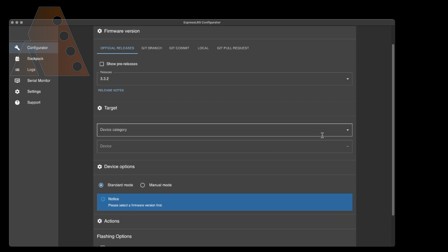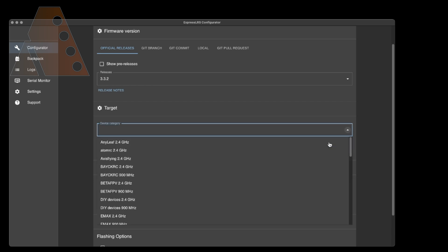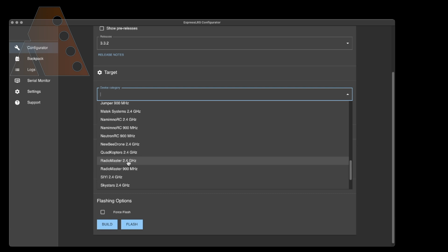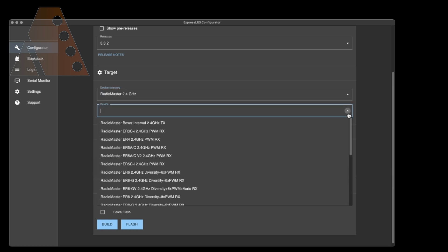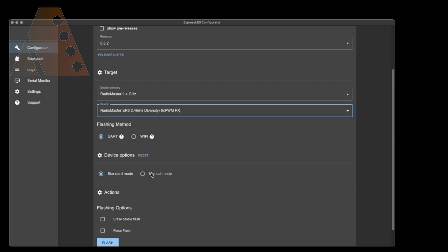We're going to click down and look for RadioMaster. So RadioMaster 2.4, we're going to go ahead and click on that. In the device, we're looking for the ER6, so we're going to go through the list here - ER6. So we have the ER6 2.4 gigahertz diversity, so that's the one we're going to use.